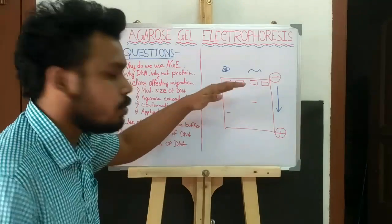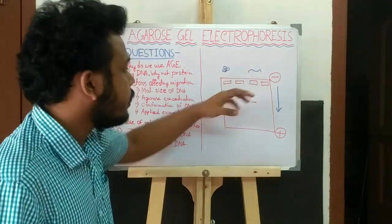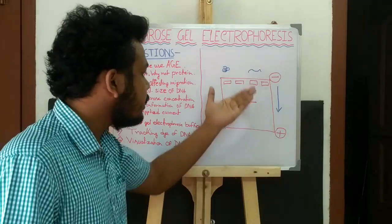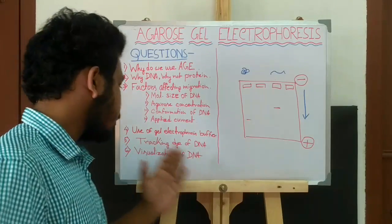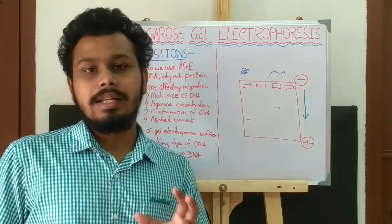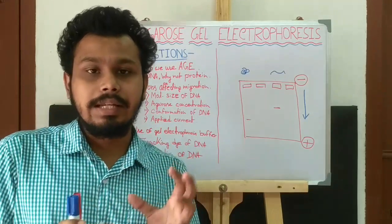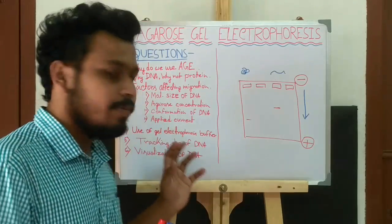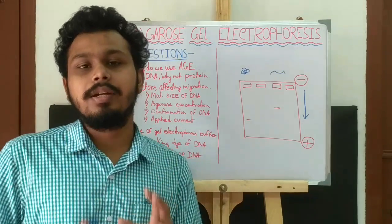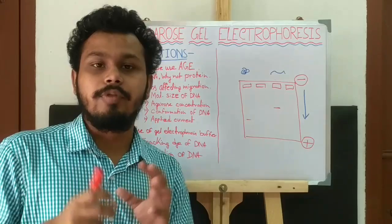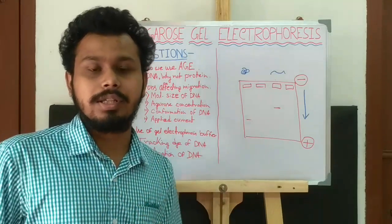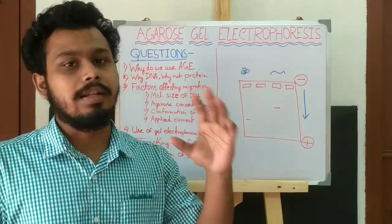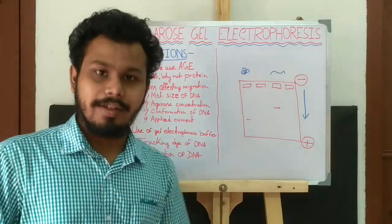Finally, visualization of DNA. DNA is colorless, so to visualize it we add ethidium bromide. Ethidium bromide is an intercalating agent which intercalates between DNA base pairs and fluoresces. We detect the fluorescence under UV light to visualize the DNA. Thank you for watching this video.